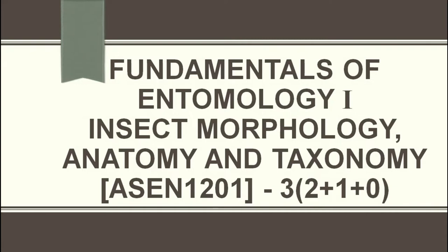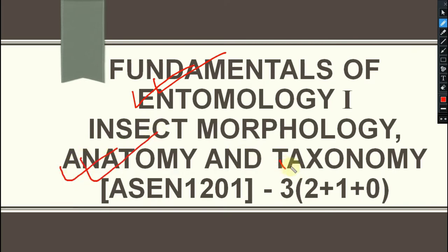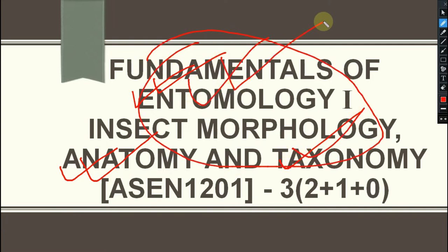Hello everyone. Today we are going to discuss the syllabus of the first course of entomology — Fundamentals of Entomology 1 — where the title is insect morphology, external features, anatomy, physiology, and taxonomy and systematics. The course code is AACN 1201, meaning first year, second semester, first course. The credit hours are two plus one: two theory classes and one practical class, with no project work.